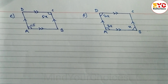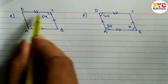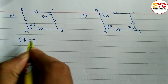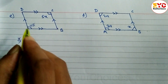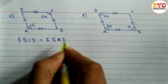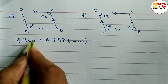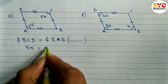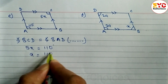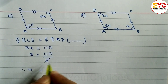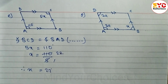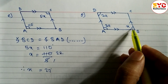Hope you understand question number d. Now look at question number e. You can see here ABCD is a parallelogram. Parallelogram means opposite angles are equal. So we write angle BCD is equal to angle BAD, as opposite angles of a parallelogram are equal. BCD is 5x and BAD is 110, so 5x equals 110. Dividing 110 by 5 we get x is equal to 22 degrees.